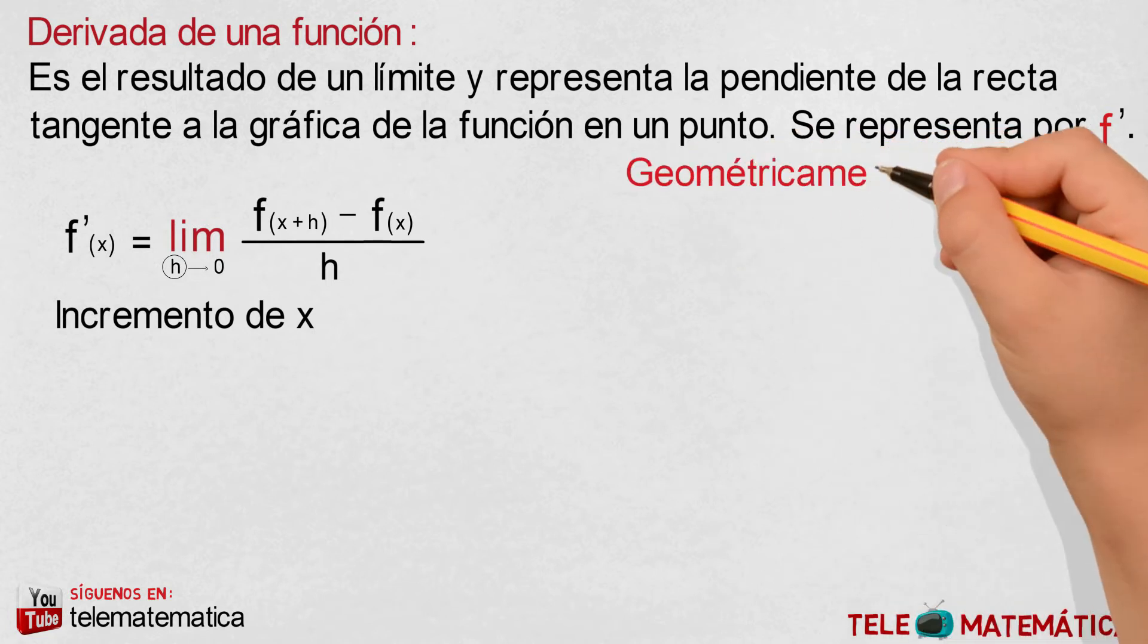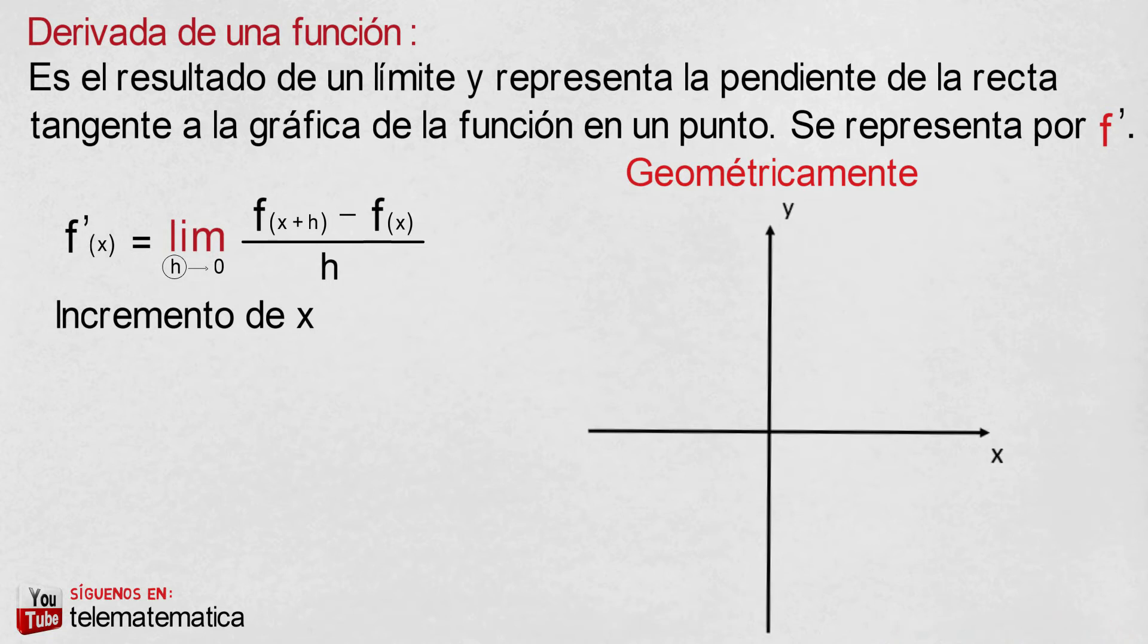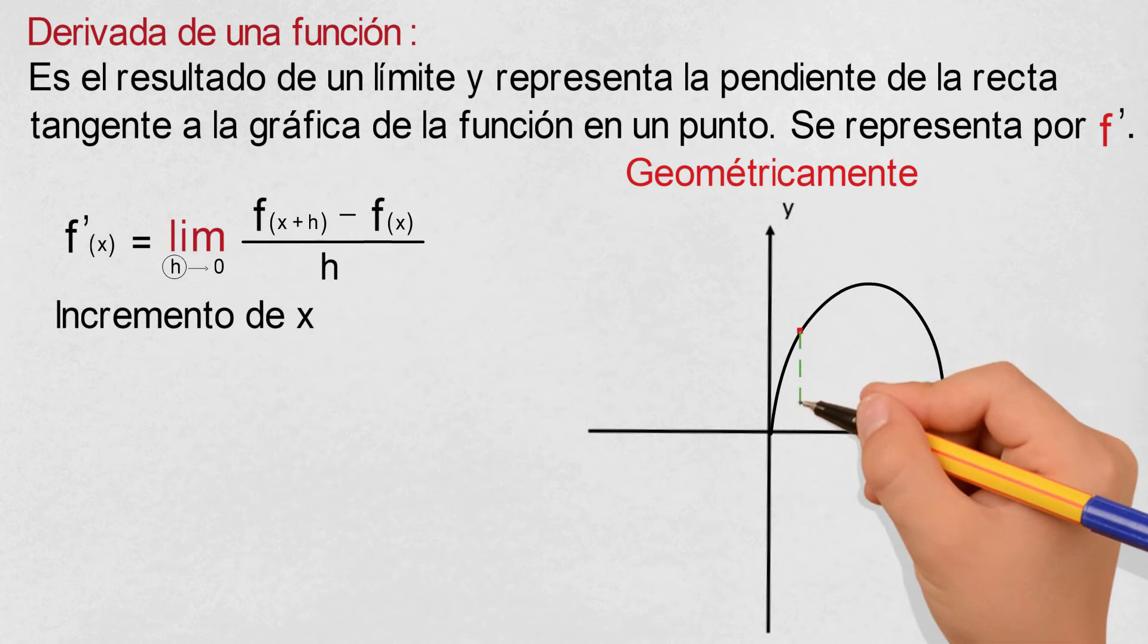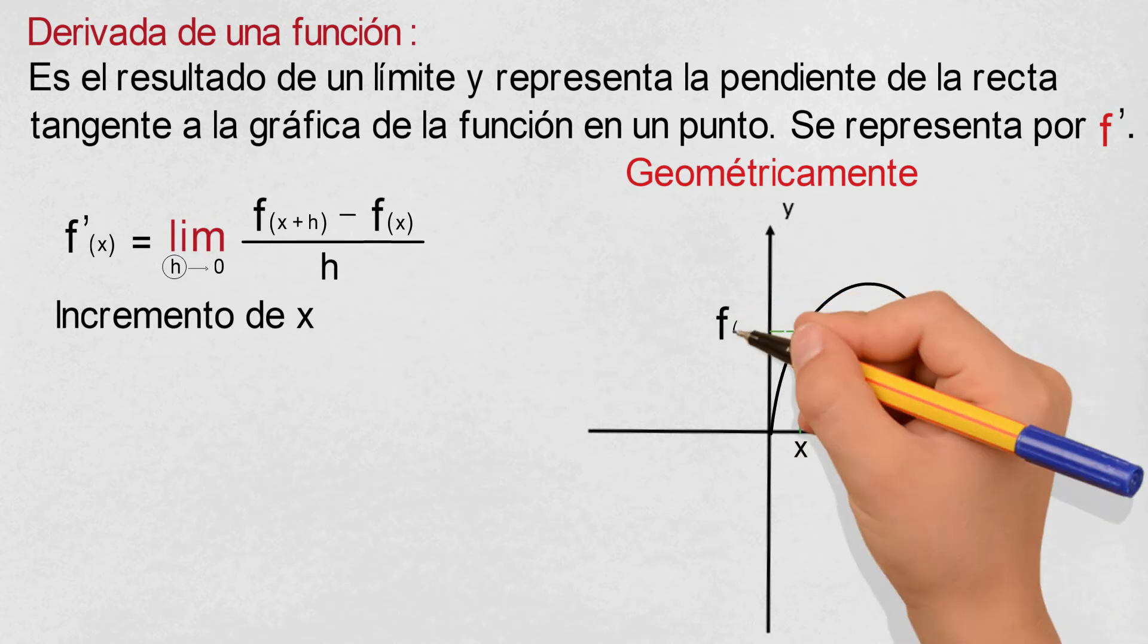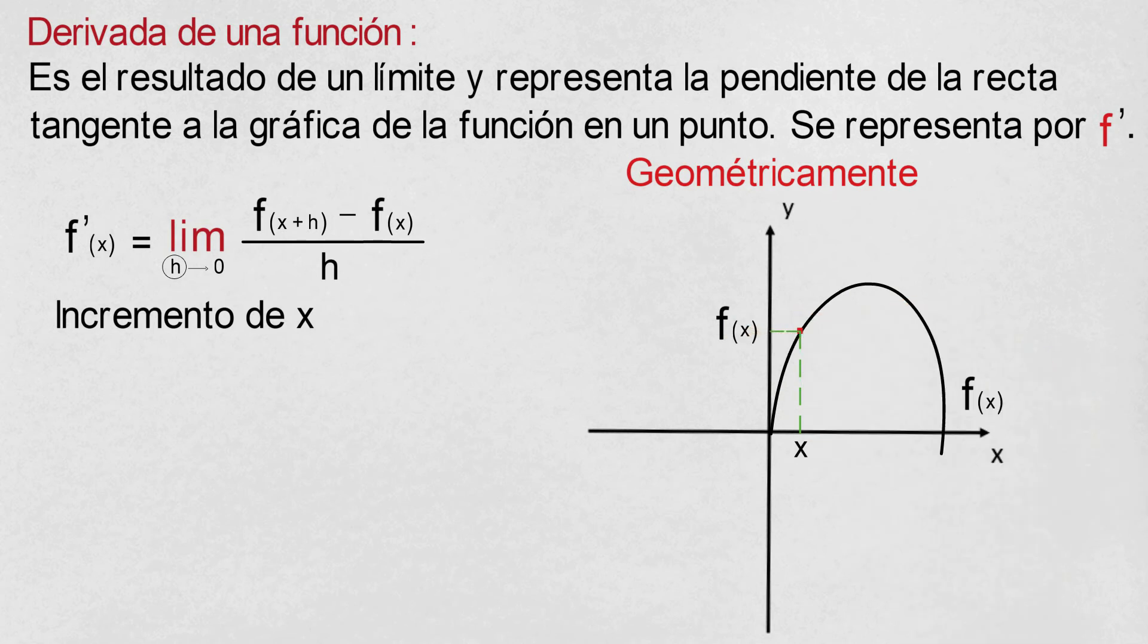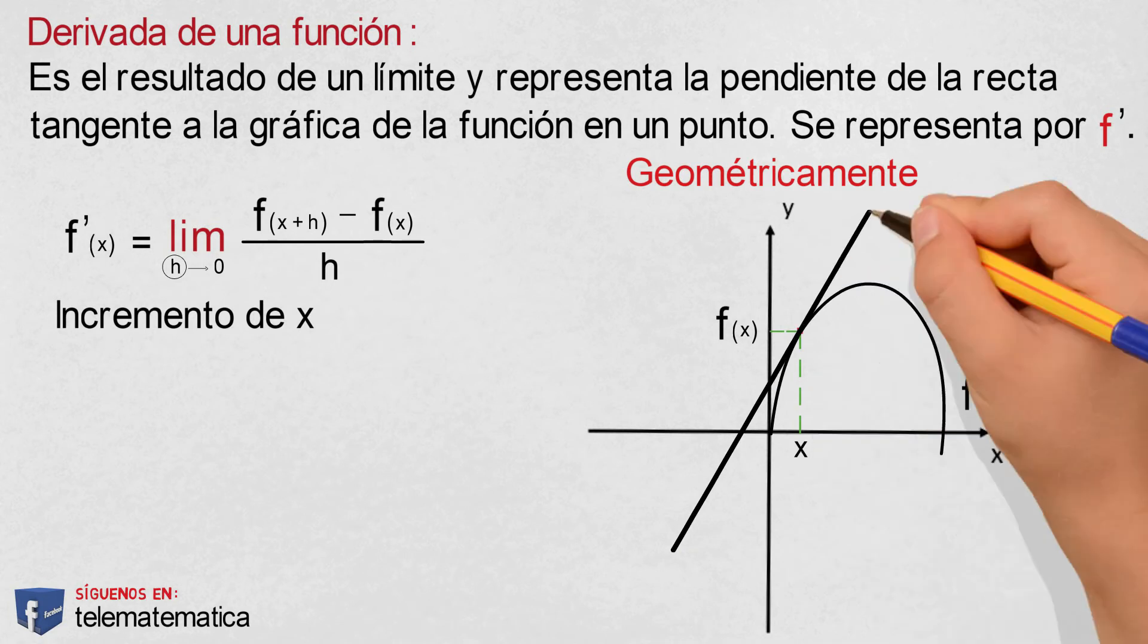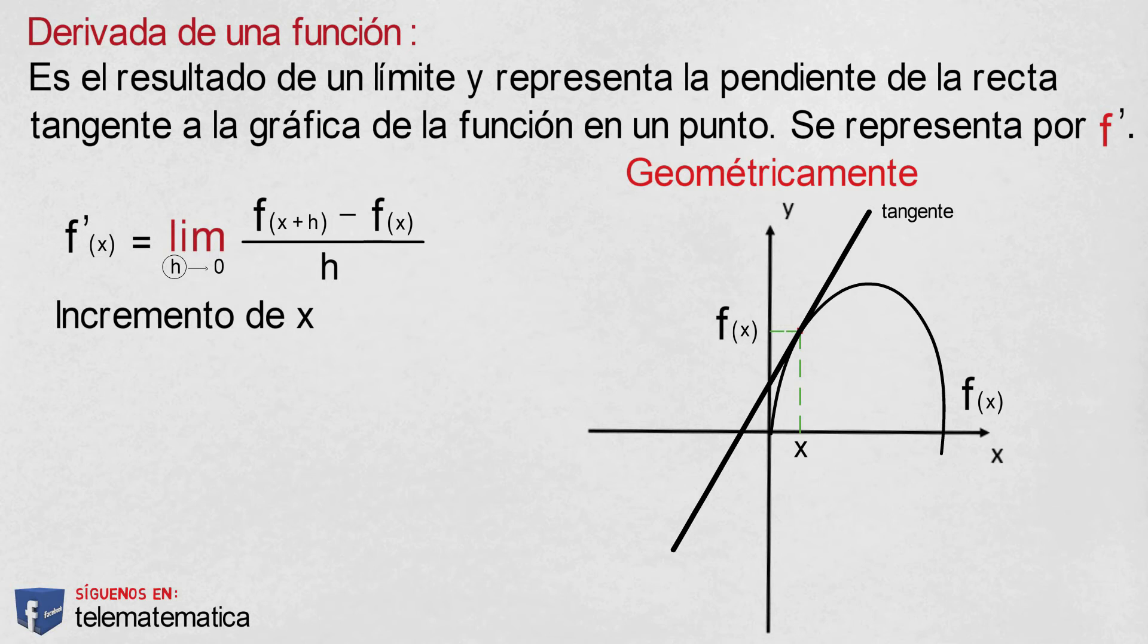Now, geometrically we have the Cartesian plane and in this, a function f of x. We have the coordinates of a point defined by x on the x-axis and its image f(x) on the y-axis, and the tangent line that passes through that point. We could write it if we also know its slope, but it is not possible with a single point.